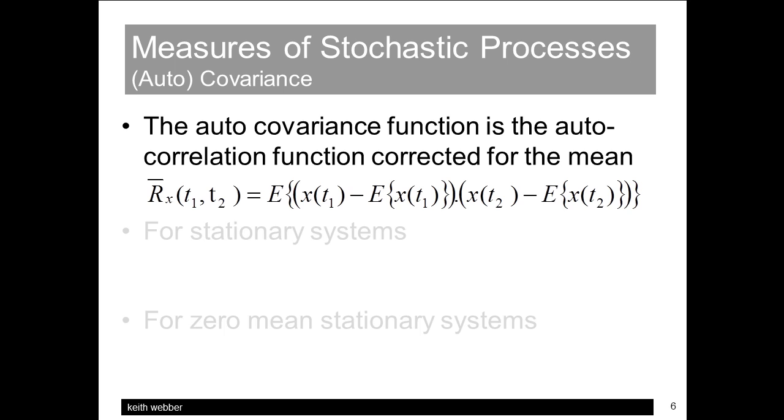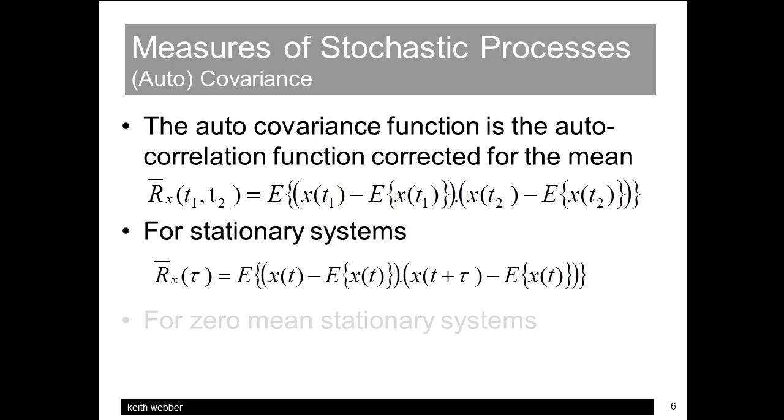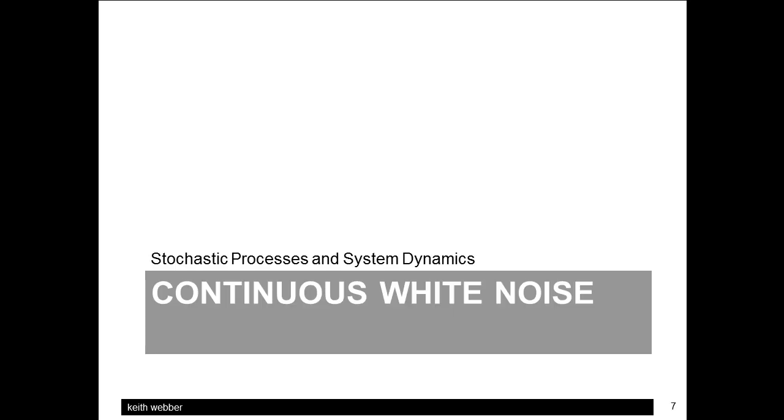Covariance is correlation corrected for any DC or mean value. We'll concentrate on stationary, and what's more, zero-mean stationary signals, when covariance r-hat conveniently becomes the same as correlation r. It's also often very convenient to assume that a noise signal is so-called white noise. So let's look at this in a bit more detail.